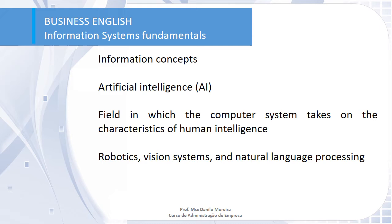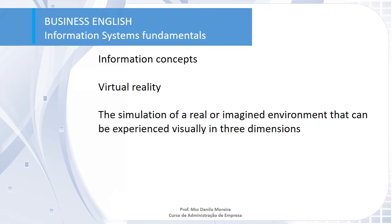Another really useful concept is artificial intelligence. It's a field in which a computer system takes on the characteristics of human intelligence. Robotics, vision systems, and natural language processing are examples of where we can use artificial intelligence. And the last concept in module one — Information Systems Fundamentals — is virtual reality. It is the simulation of a real or imagined environment that can be experienced visually in three dimensions. This is one of the most modern concepts for information systems.